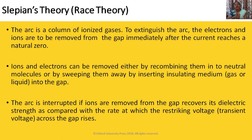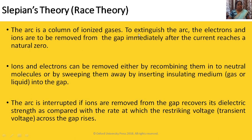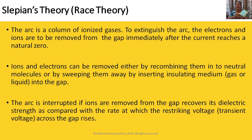In the race theory, there is a race between dielectric strength recovery and the rate of rise of restriking voltage. The arc is a column of ionized gases. To extinguish the arc, the electrons and ions are to be removed from the gap immediately after the current reaches a natural zero. Ions and electrons can be removed either by recombining them into neutral molecules or by sweeping them away by inserting an insulating medium — gas or liquid — into the gap. By inserting that medium, we make the medium between the two contacts deionized, so the restriking voltage is less and dielectric strength is more, and the arc is interrupted.